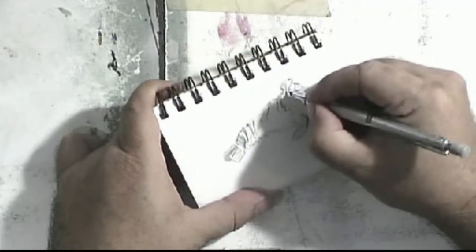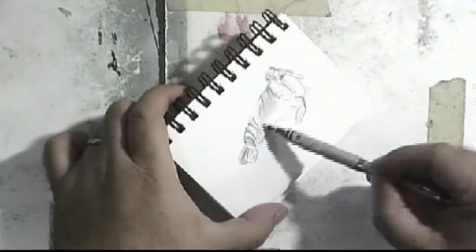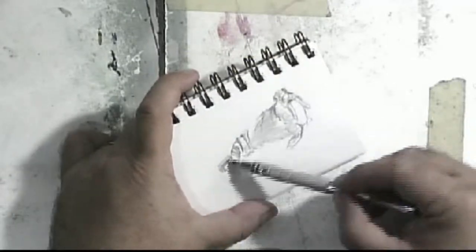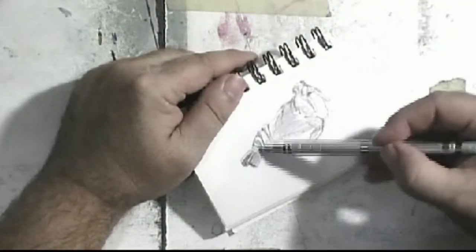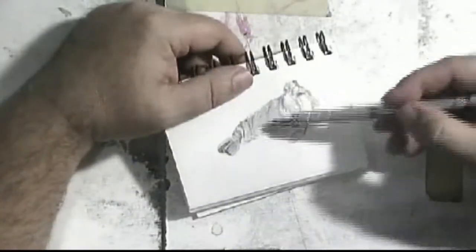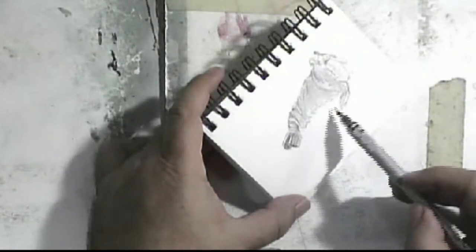Adult walruses are characterized by prominent tusks and whiskers and their considerable bulk. Adult males in the Pacific can weigh more than 2,000 kilograms or 4,400 pounds, and among pinnipeds are exceeded in size only by the two species of elephant seals.